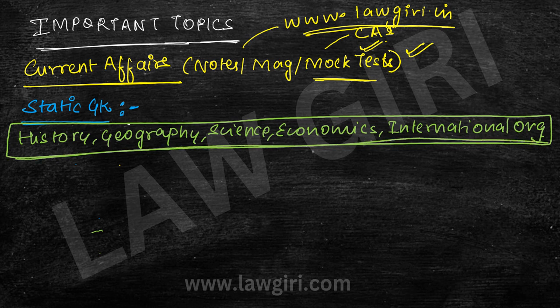If you think this is a weak area, revise them — these are very very important. I have made current affairs and static GK together because they both make up 60 marks in the paper. So if you have any important questions from static GK pending, make sure to cover them.